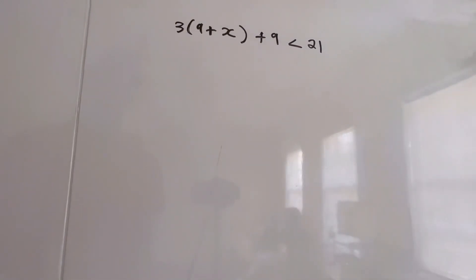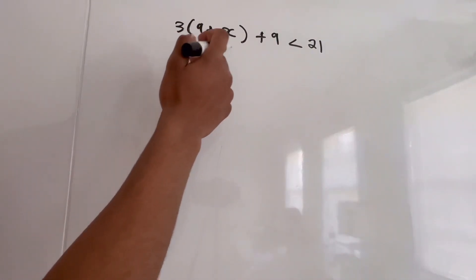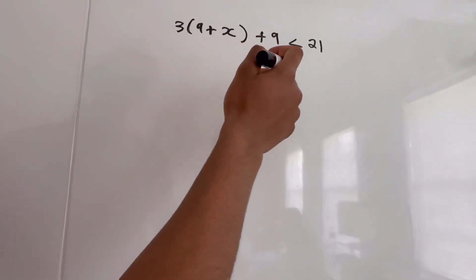Hey guys, welcome back to Click Academics. In today's video, I'm going to be teaching you guys how to solve inequalities with distribution. So right here, we have the problem 3 times 9 plus x plus 9 is less than 21.